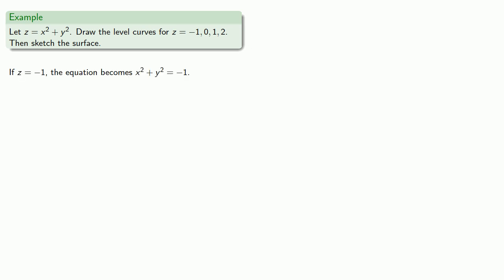So if z equals negative 1, the equation becomes x squared plus y squared equals negative 1. And we try and find a point that solves this equation, and there isn't any.